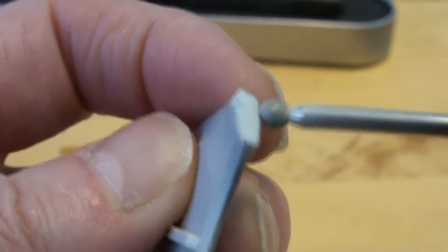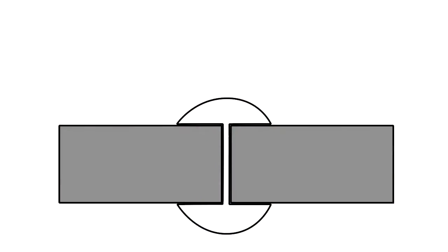Bondic only sets when it's activated by UV light, so if you were to try to activate a thin layer, it wouldn't work well, because the Bondic in the middle wouldn't get activated.